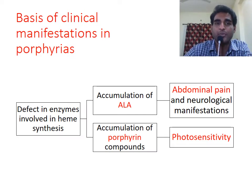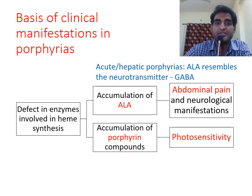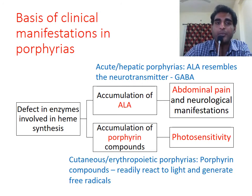If the major metabolite accumulating is ALA, the presentations are acute with neurological involvement. This is because ALA resembles the neurotransmitter GABA. On the other hand, if porphyrins are the accumulating intermediates, it leads to photosensitivity, because porphyrin compounds readily react to light.